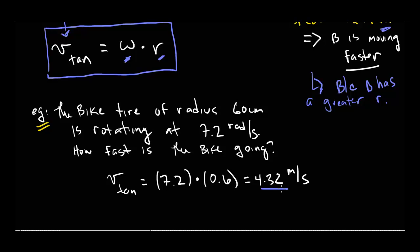Simply based on the radius and the omega, I can figure out how fast the bike is going. This would not work if omega were not measured in radians — if we were using degrees, this equation would not work. So this only works if omega is in radians.